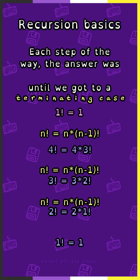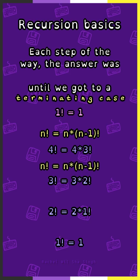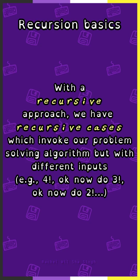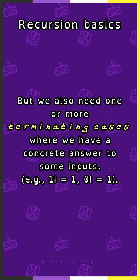Each step of the way, the answer was n factorial is n times n minus one factorial, and we kept going until we got to a terminating case of one factorial is one. With a recursive approach we have recursive cases, which invoke our problem-solving algorithm but with different inputs — for example, what's four factorial, what's three factorial, what's two factorial. But we also need one or more terminating cases where we have a concrete answer to some inputs, like one factorial is one, zero factorial is also one.